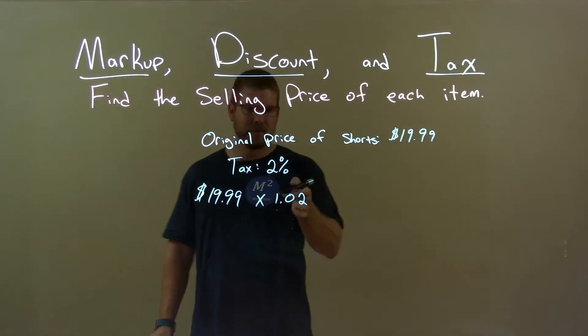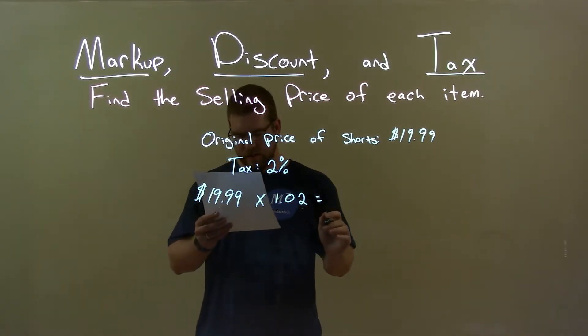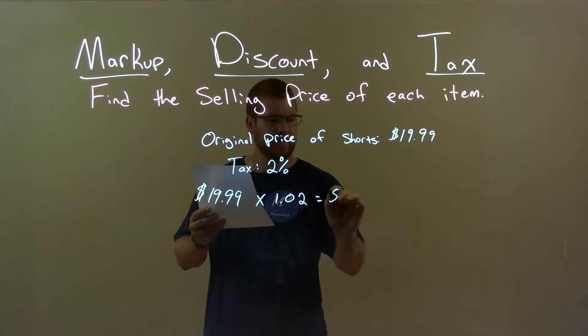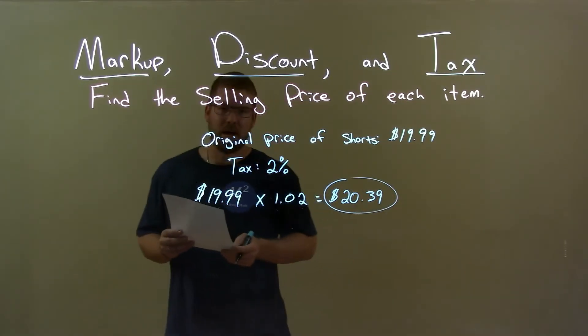The 0.02 here represents the 2% tax, and the one makes sure that we have the original price. This gives us an answer of $20.39 after taxes.